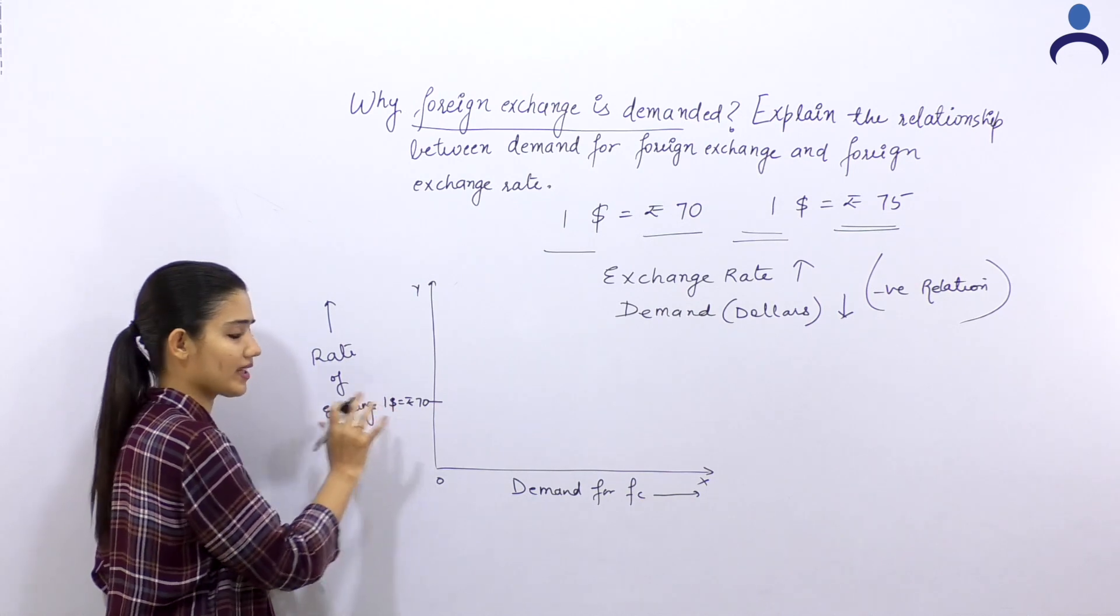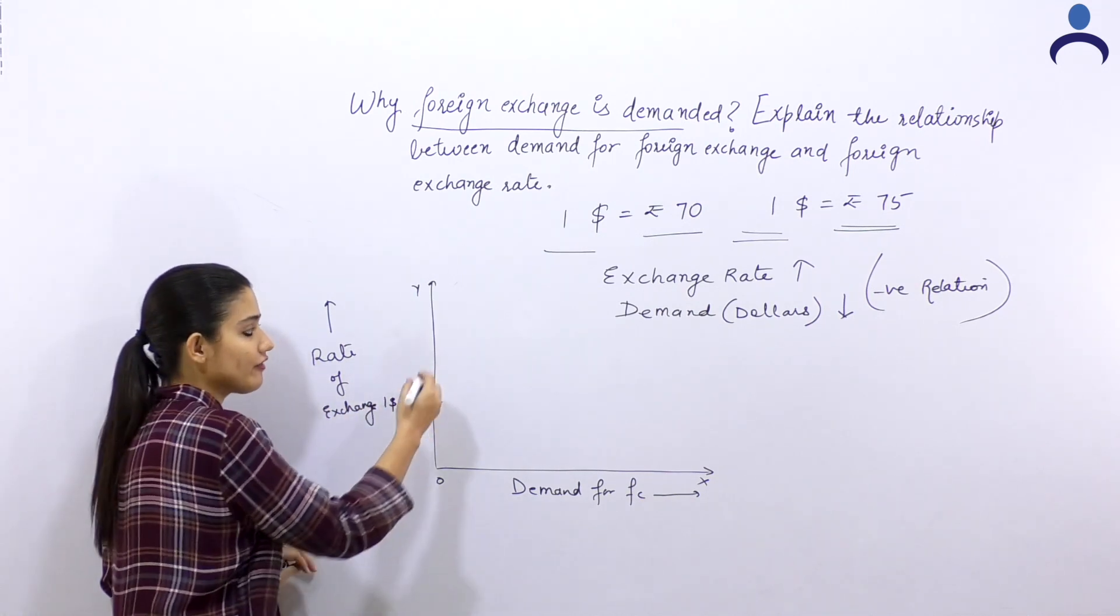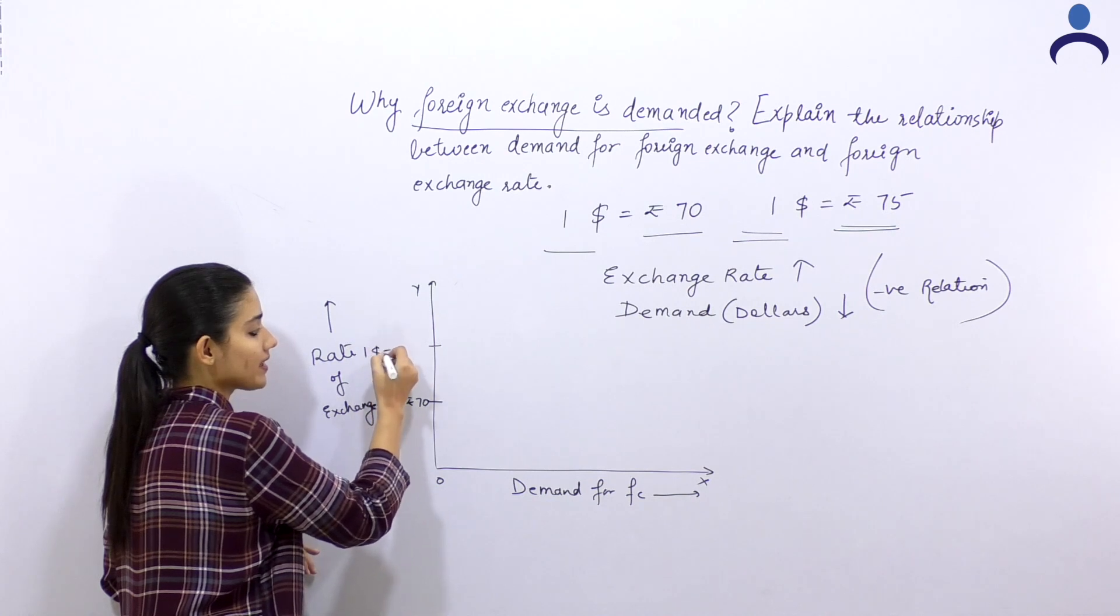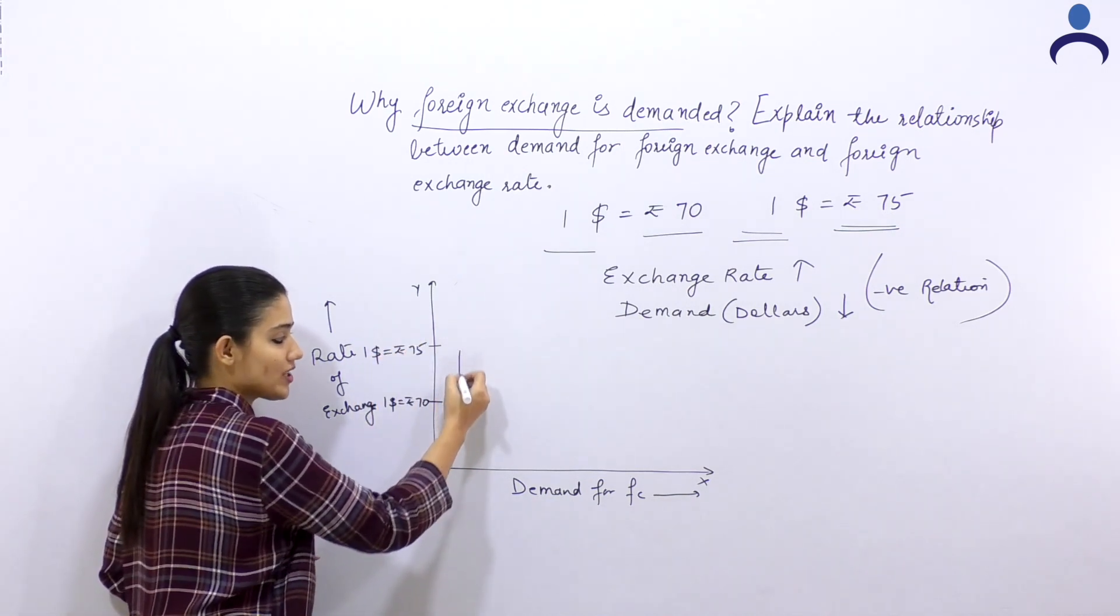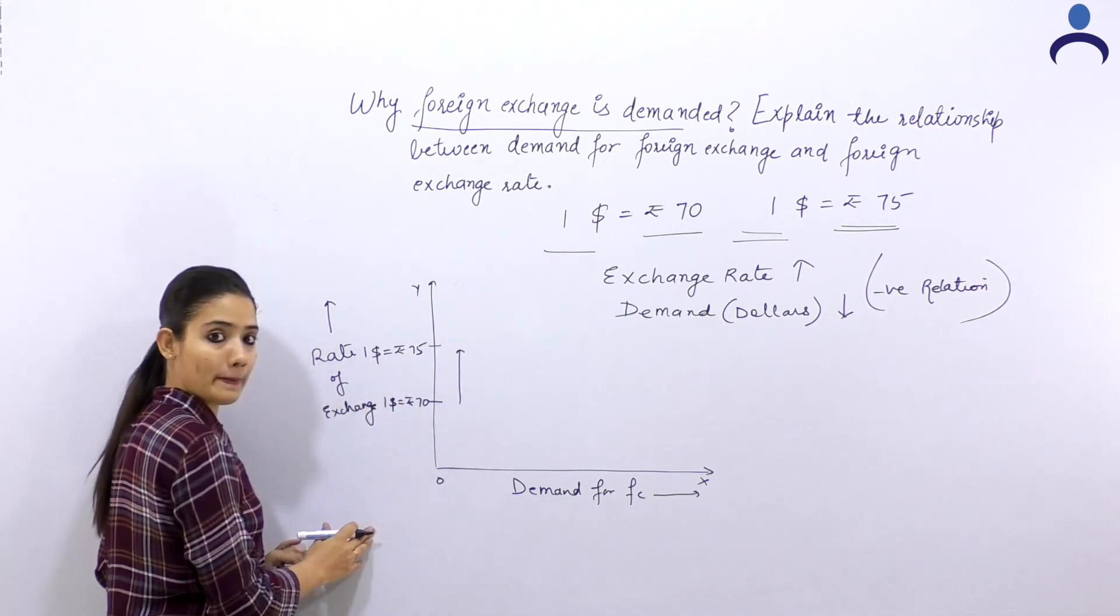How much was the dollar? 70. And how much was the value? 75. This means the exchange rate has increased.